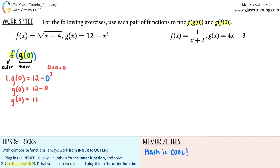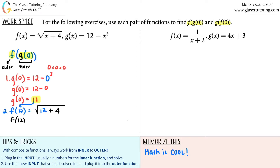Now we're going to use the answer we got — 12 — as the input for the outer function. The outer function was f. So it's f of 12. I go to my f function and anytime I see an x, I plug in 12. It's going to be the square root of 12 plus 4, which is the square root of 16. The square root of 16 is 4. So f of g of zero equals 4.